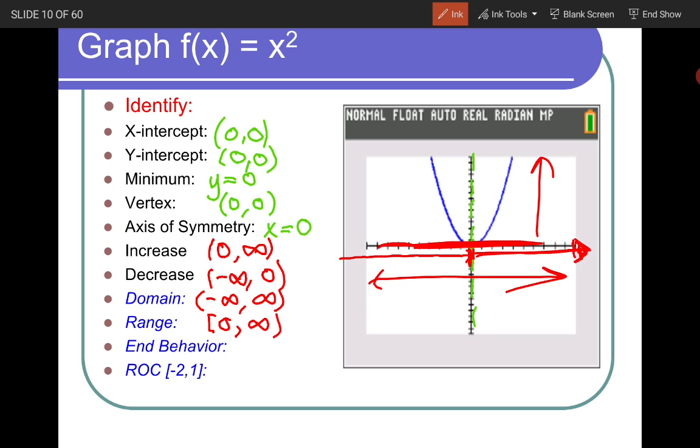Our end behavior. So as X, remember there's two parts to it. As X goes to, let's start with the negative infinity. What does f of X go to? F of X, that means our Y value. As we go far left, it goes to positive infinity, right? And then as X goes to positive infinity, f of X goes to, let's see, it also goes up to infinity.